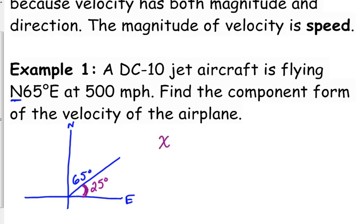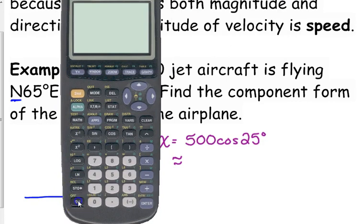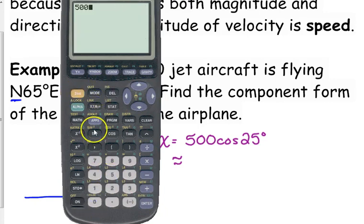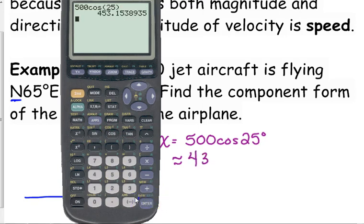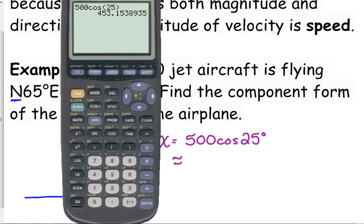So if we want to find the component forms, we've got our x component is our magnitude. In this case, the magnitude is the speed, 500 miles per hour, times the cosine of 25, not the angle that they gave us in the problem, because that's not measured from the x-axis. Crunch that right there. Again, making sure that we are in degree mode. 500 cosine 25.